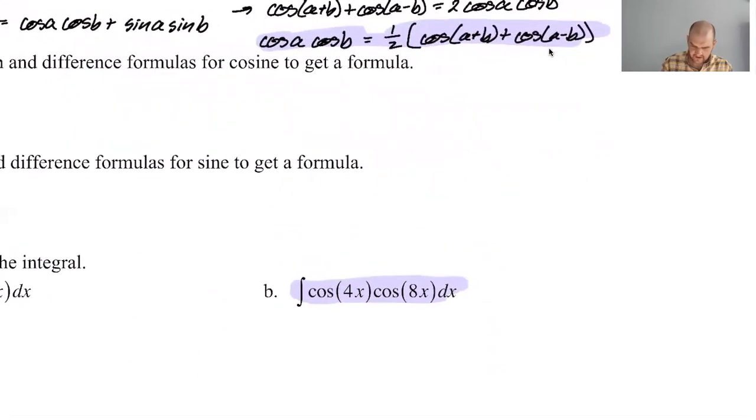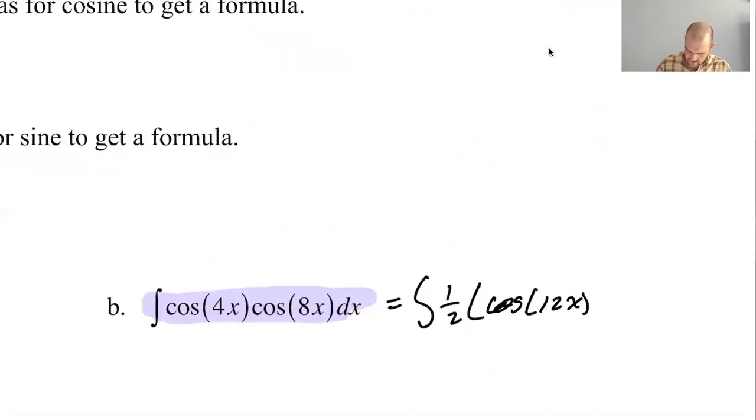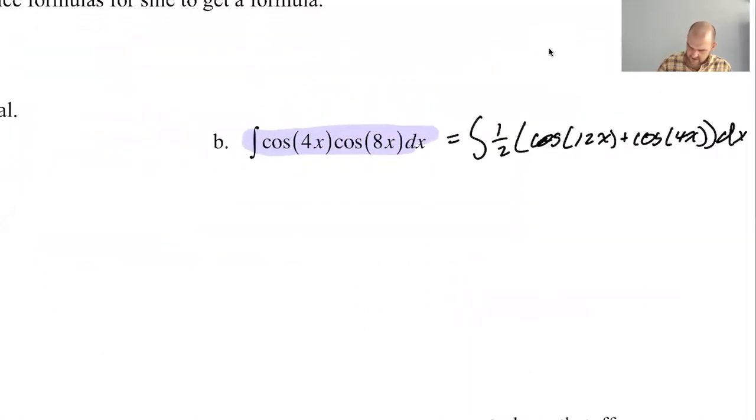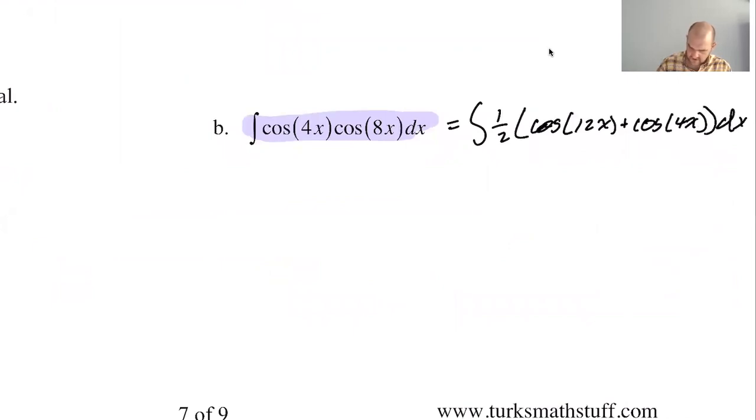I need the formula, so this should be equal to, according to the formula, it's cosine of a, so a is 4x and b is 8x. So I need to add them. So it'll be 1 half and then cosine of add them to get 12x plus cosine of subtract them. You get minus 4x, but cosine is even. So I'm just going to say cosine of 4x and then dx. So that's what we need to do. Let's integrate that.